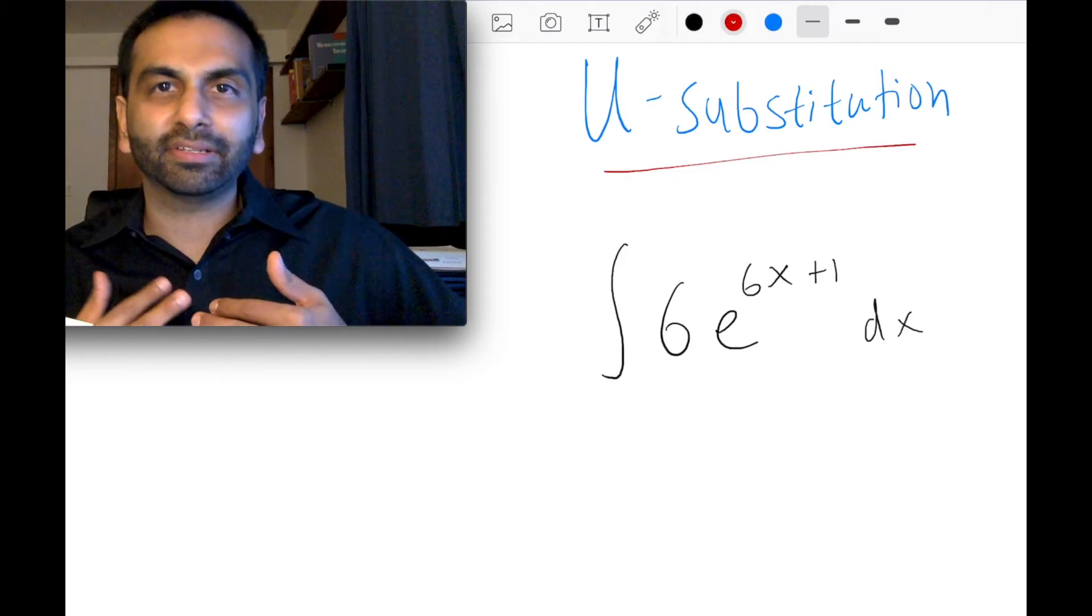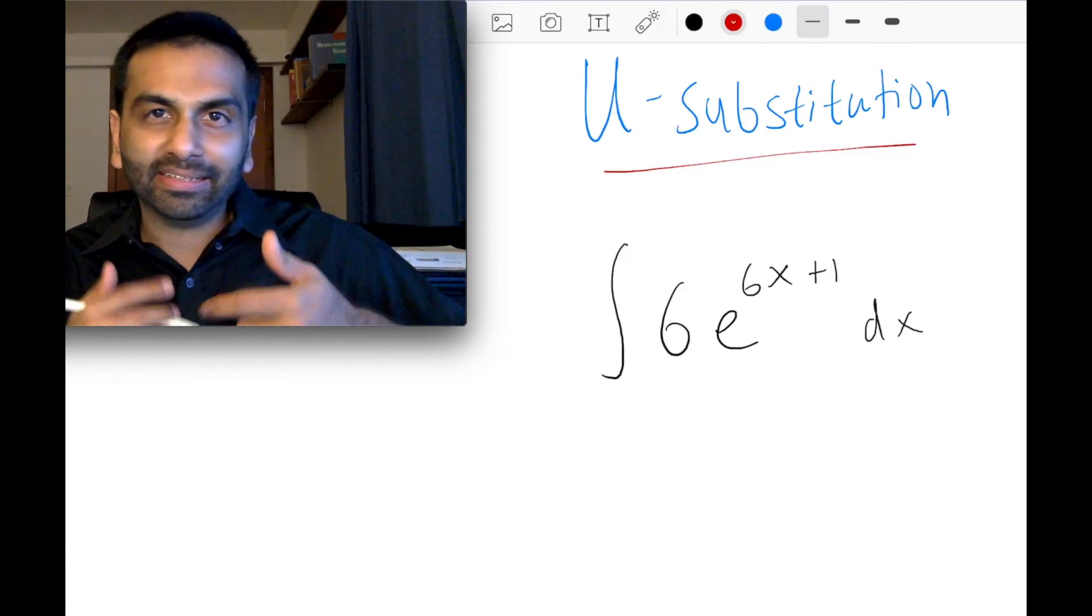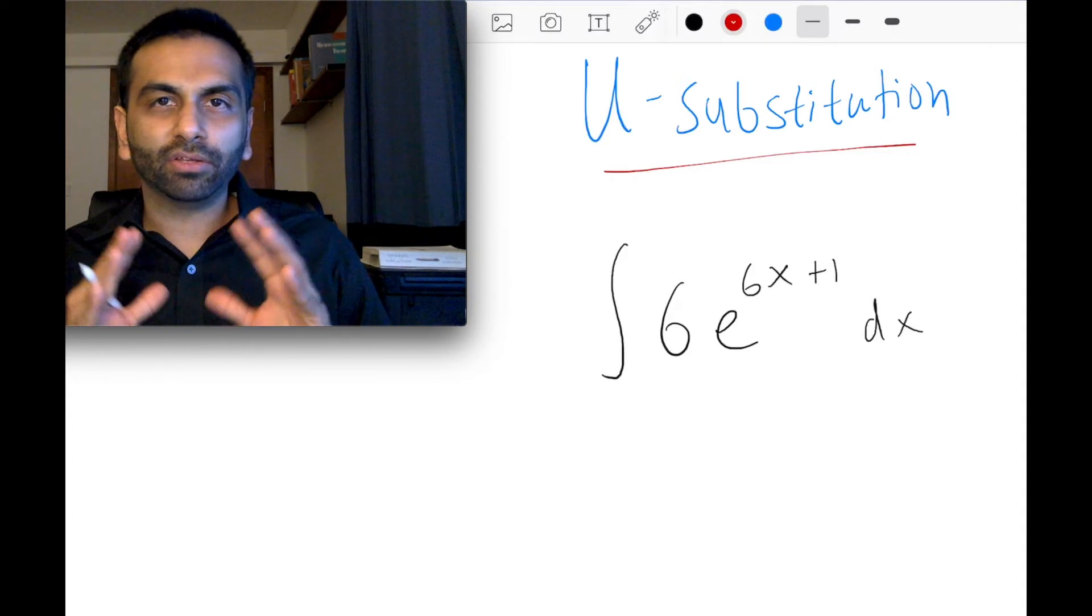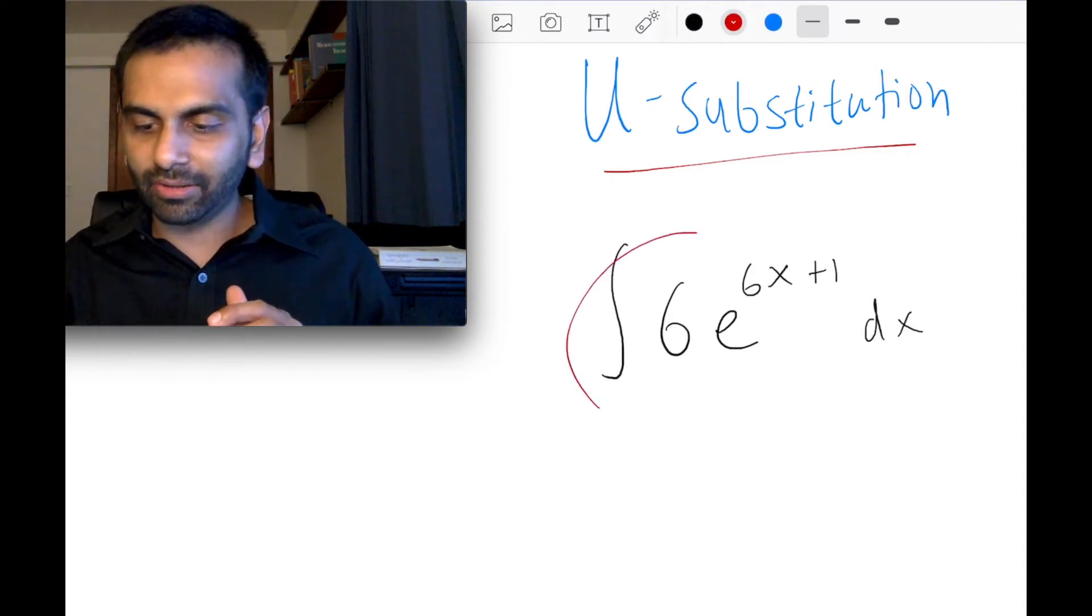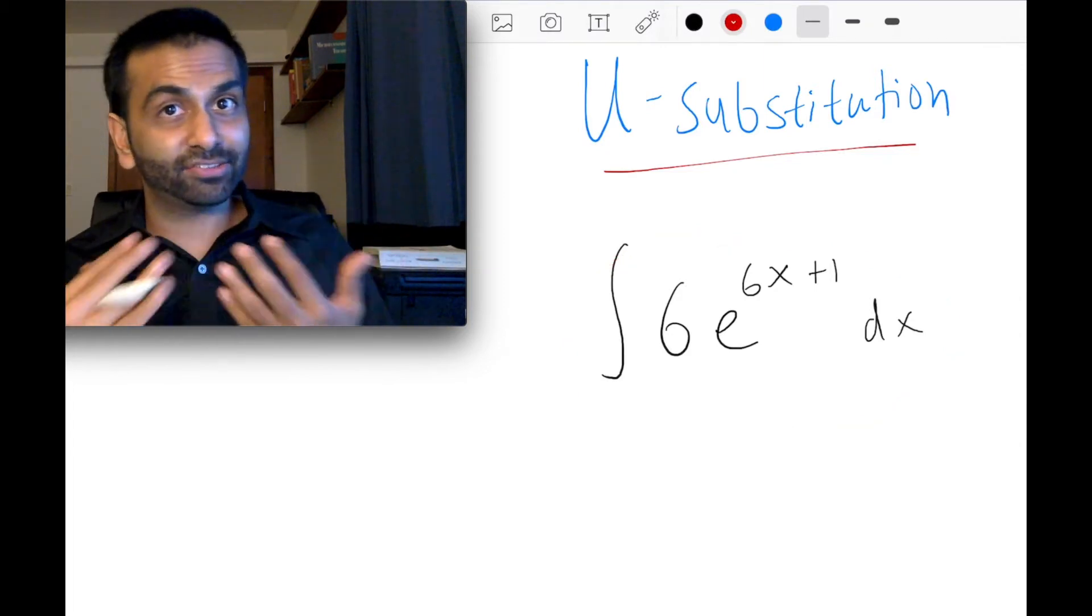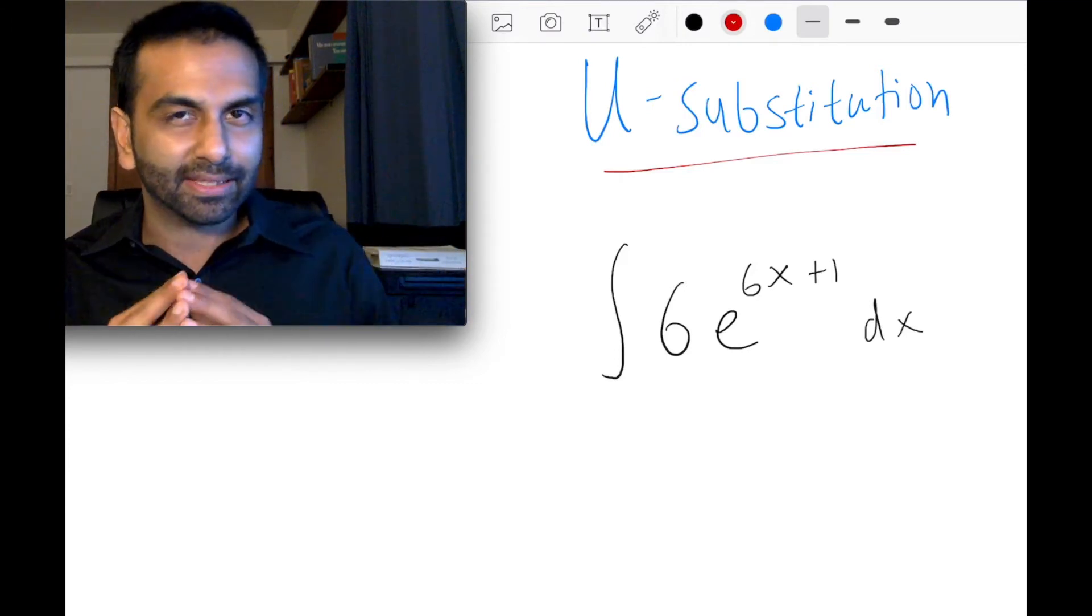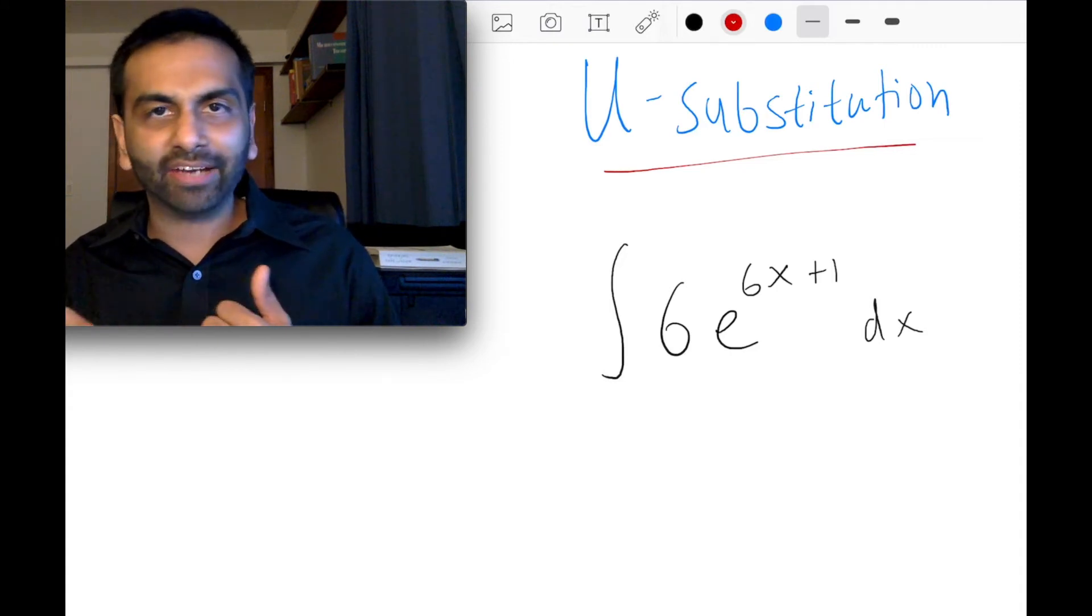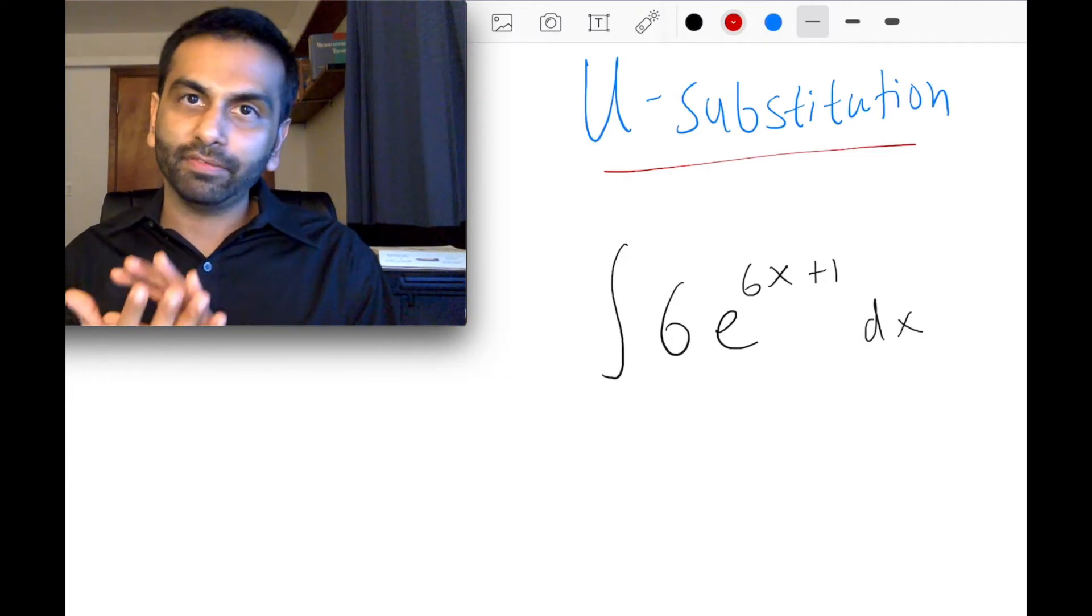U-substitution is basically the integration version of the chain rule. It's technically undoing the chain rule from the derivative. So long story short, here's what u-substitution is: it's basically a way to take an integral that we're having a hard time solving and swap out the x's with another letter. Usually we call it u, but you can really call it anything. It's a way to change the variable instead of x, calling it a different variable and then turning it into an easier integral to solve in the process.